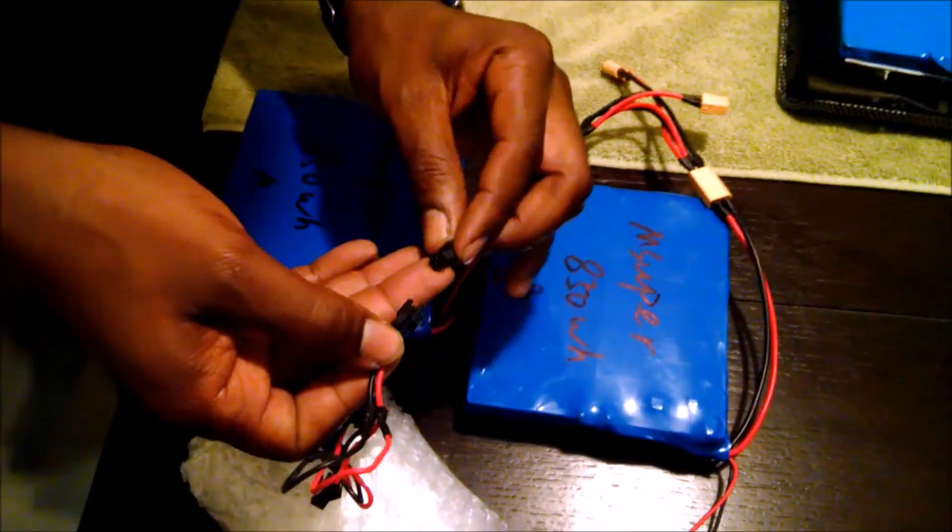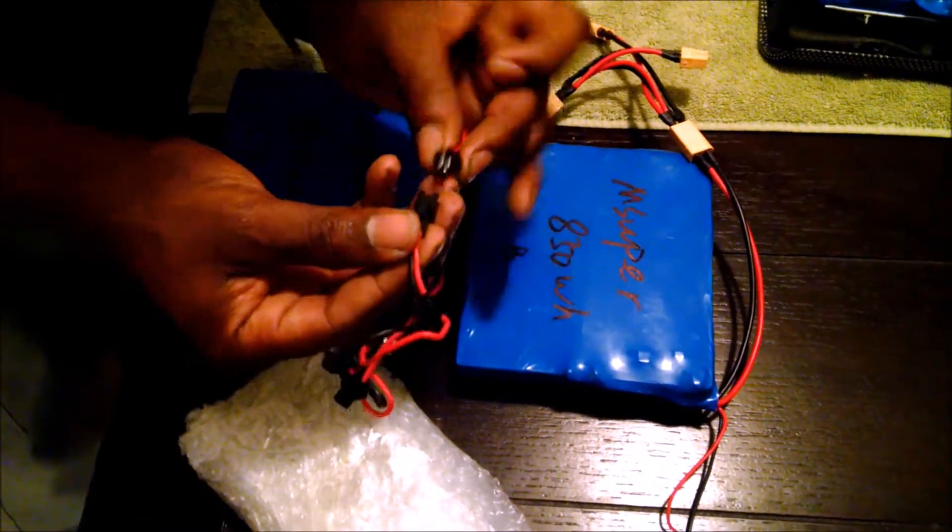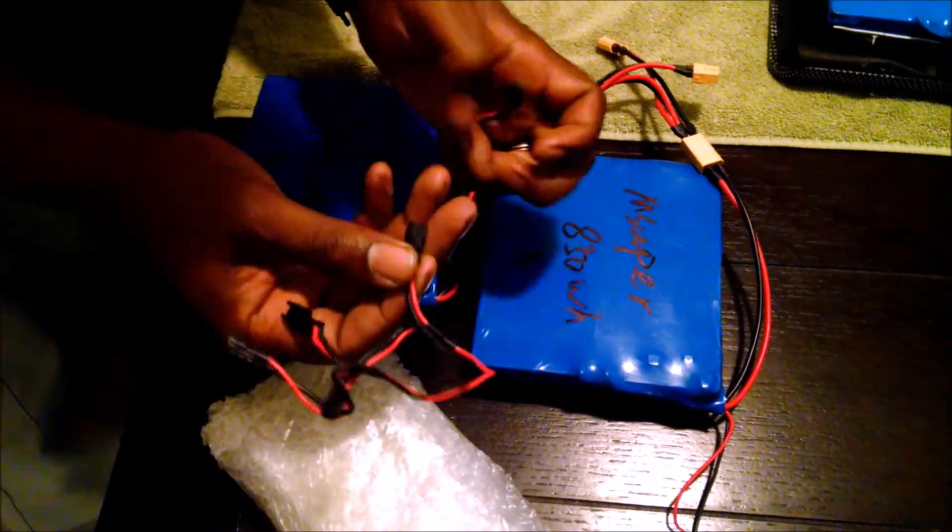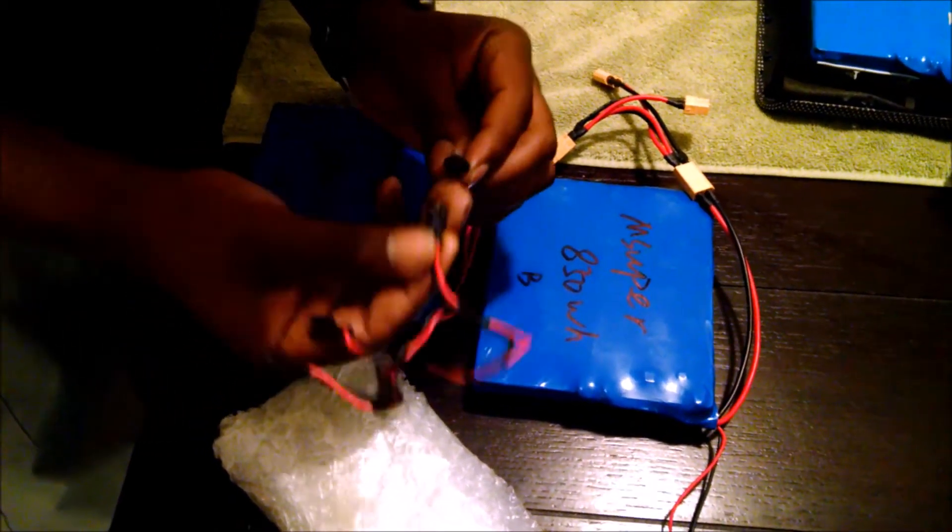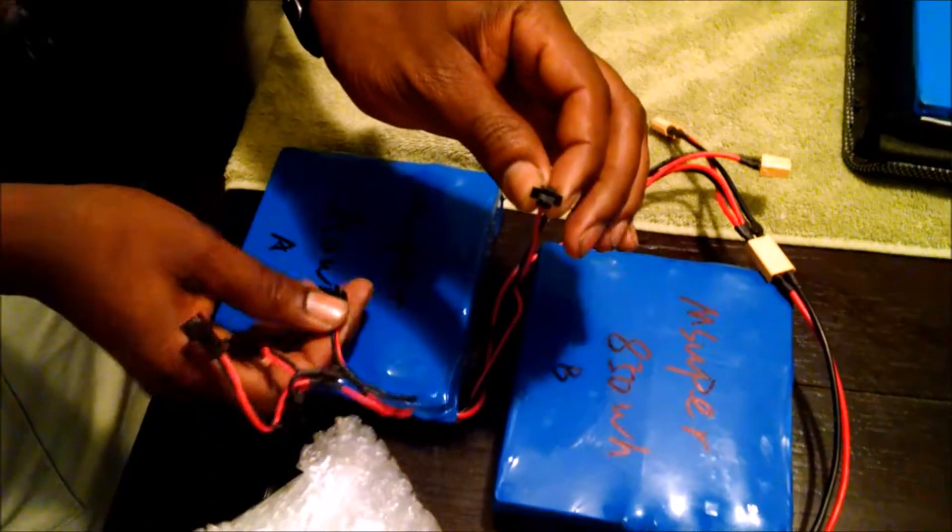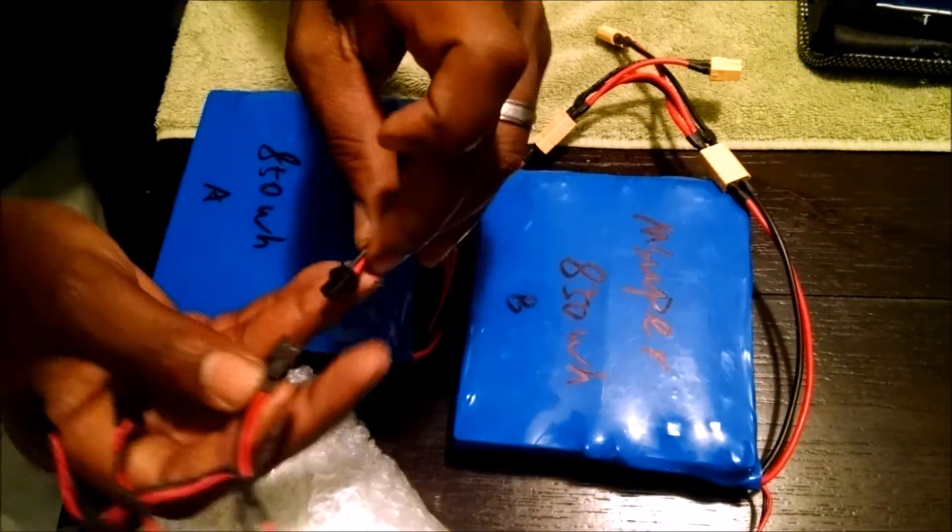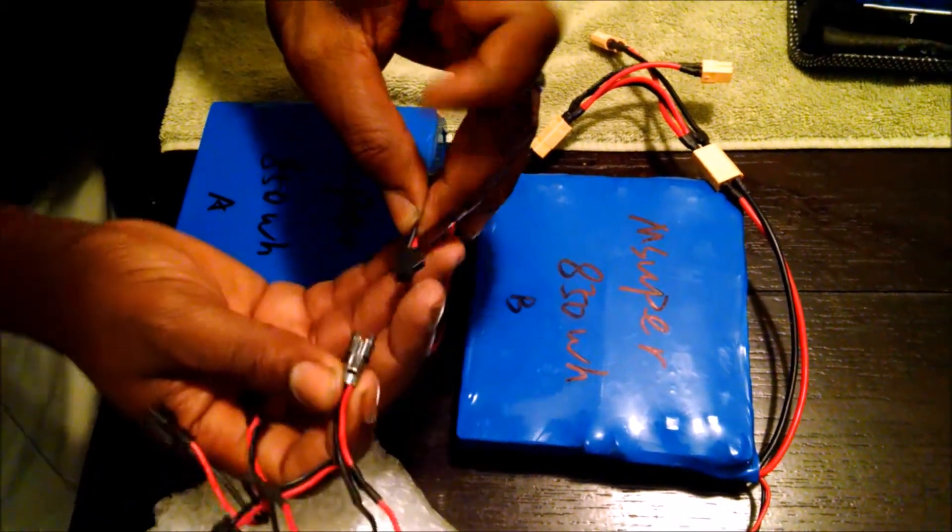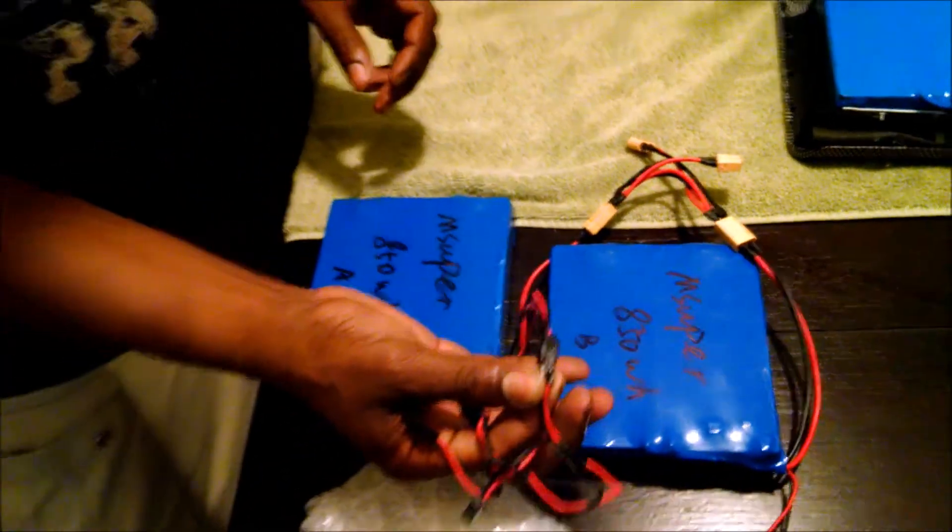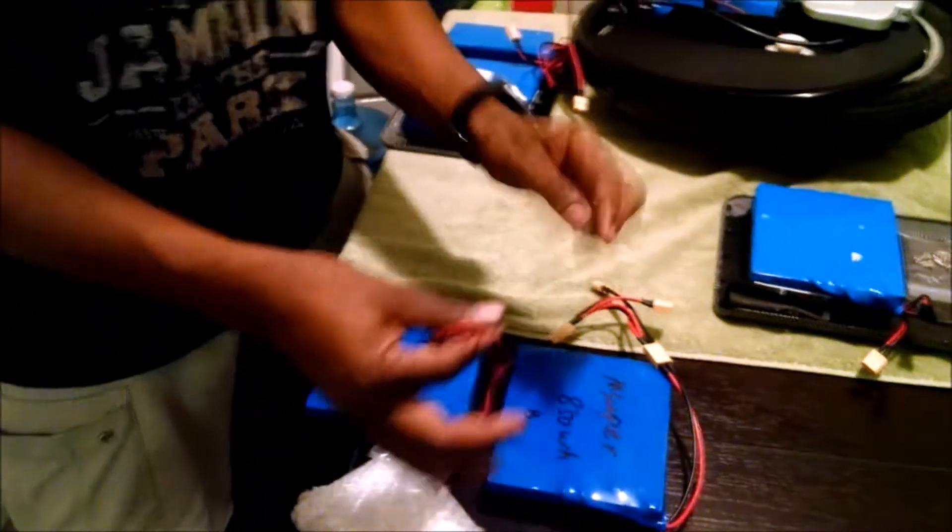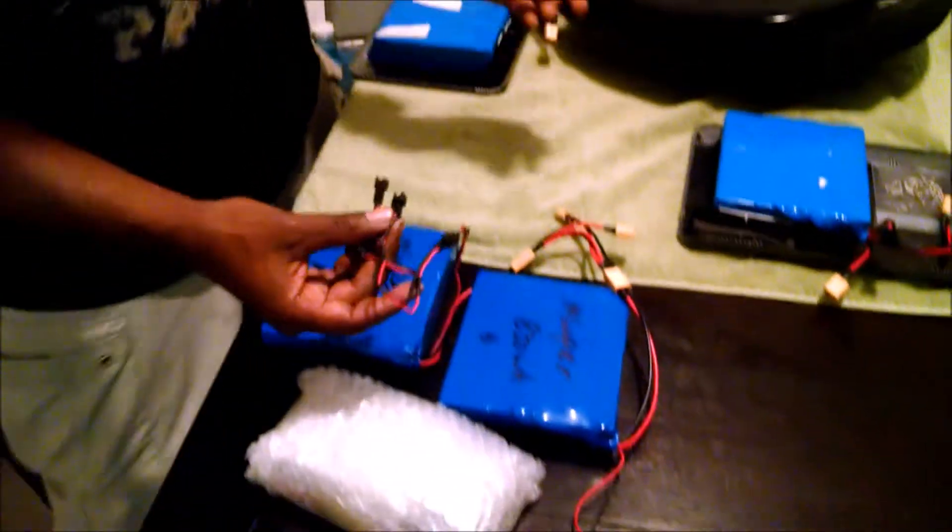This particular connector is cool because it only goes one way, but you definitely want to take note of red and black. Red will be your positive terminal and black will be your negative, so you want to take note of that. We don't want to short anything out. Once I line these up just like that, they will connect just like that. I have positive on my right, and they snap in just like that. You'll do that for all three, battery A, B, and C.